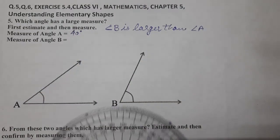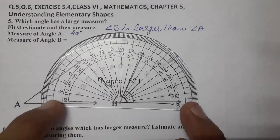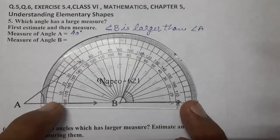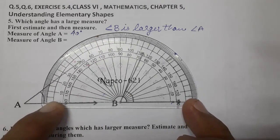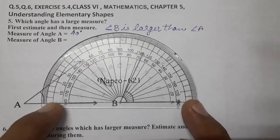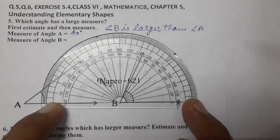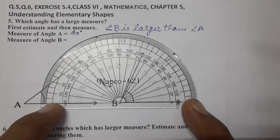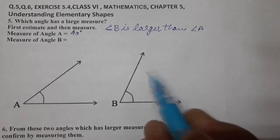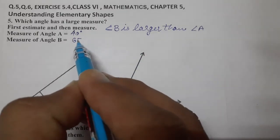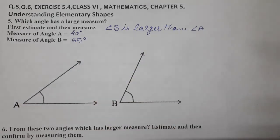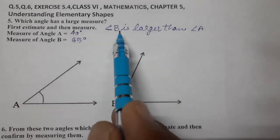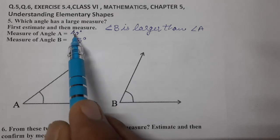And measure of angle B, let's measure angle B. What is it coming? It is coming near about 65, 66, near about 66. This is just the approximation, we can write near about 65. So angle B is 65 degrees. Now we are correct also. Angle B is larger. See, 65 is greater than 40, actual measurement also.